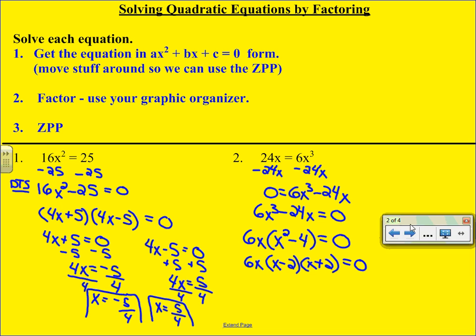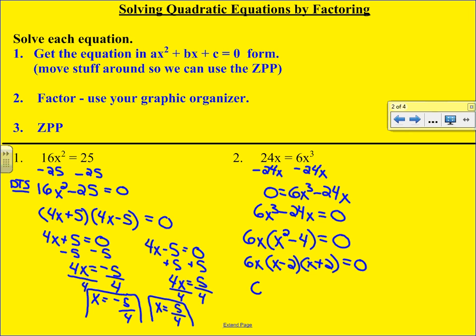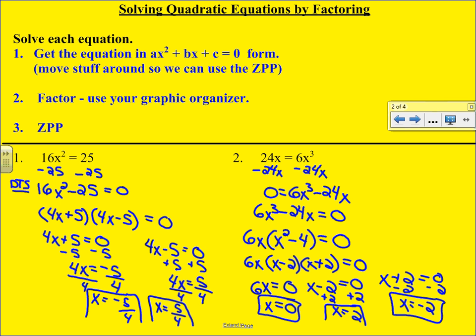The 6x we're going to set equal to zero, x - 2 we're going to set equal to zero, and x + 2 we're going to set equal to zero. For 6x = 0, we divided both sides by six and got zero. For the next one, we're adding two to both sides. On the last one, we're subtracting two on both sides. Note we have three answers. Just a little trick: if the degree is three, if we have x³, you're going to end up with three answers for x. When we have x², you're going to get two answers for x.